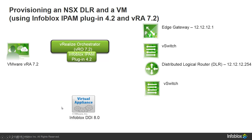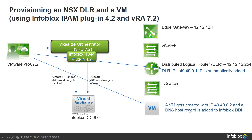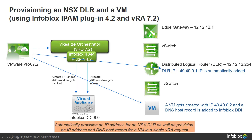I'm going to submit a request through VRA, which will go to VRO. The create IP address ranges workflow will be automatically invoked, assigning an IP address to the DLR. This IP address will be picked from a network automatically created from the Infoblox appliance, and the first available IP address within that network will be assigned to the DLR. Shortly after, the Allocate workflow will assign an IP address and a DNS host record for a virtual machine, all within a single VRA request.